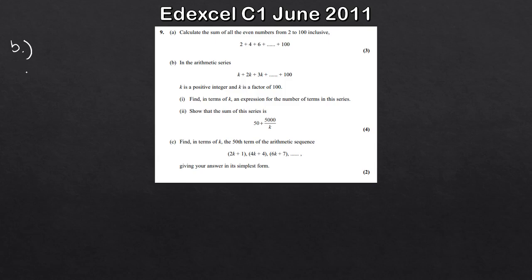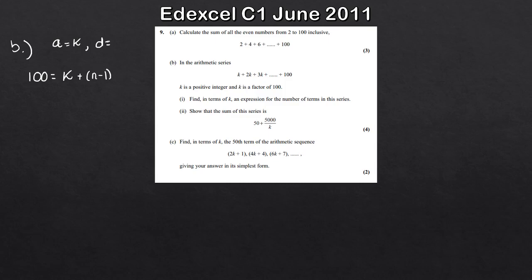Using the nth term formula: 100 equals A plus (N minus 1) times D. The first term A equals K, and the common difference is also K since we're adding K each time: K, then 2K, then 3K and so on. So we have 100 equals K plus (N minus 1) times K.